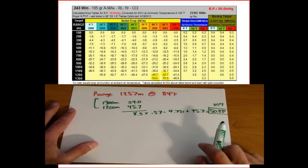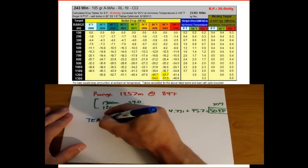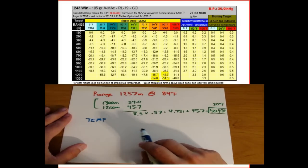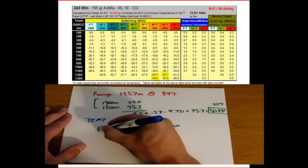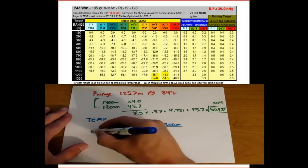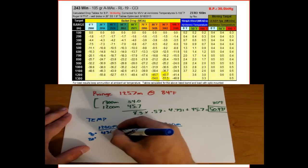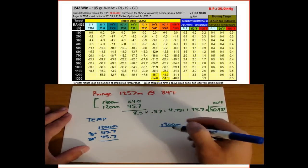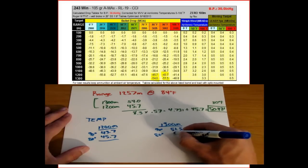Now we figure out the temperature correction. We need to find the temperature difference at 1,200 meters between 80 and 90 degrees, and at 1,300 meters between 80 and 90 degrees. At 1,200 meters: 90°F gives 43.7 MOA drop; 80°F gives 45.7 MOA drop. At 1,300 meters: 90°F gives 51.5 MOA drop; 80°F gives 54.0 MOA drop.